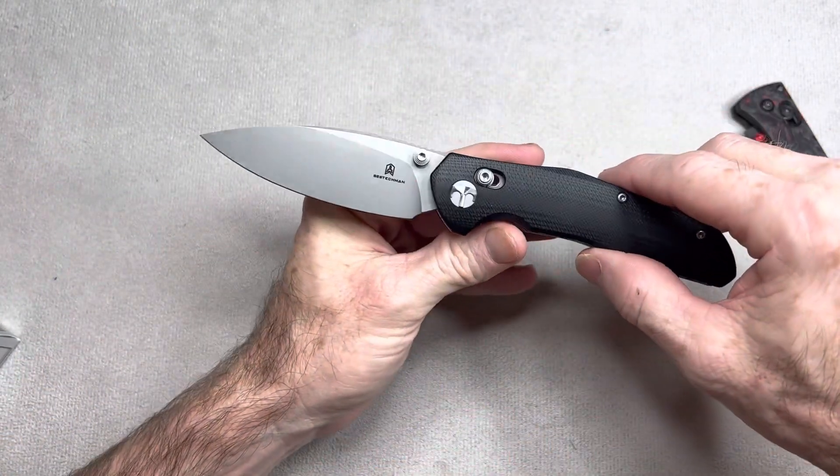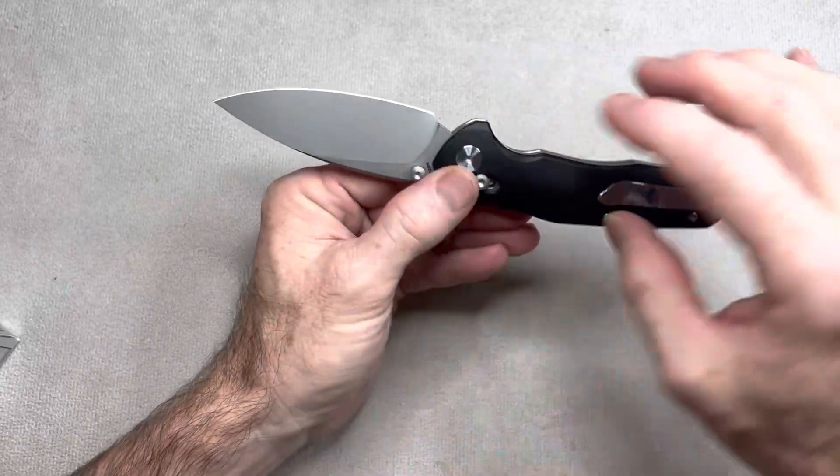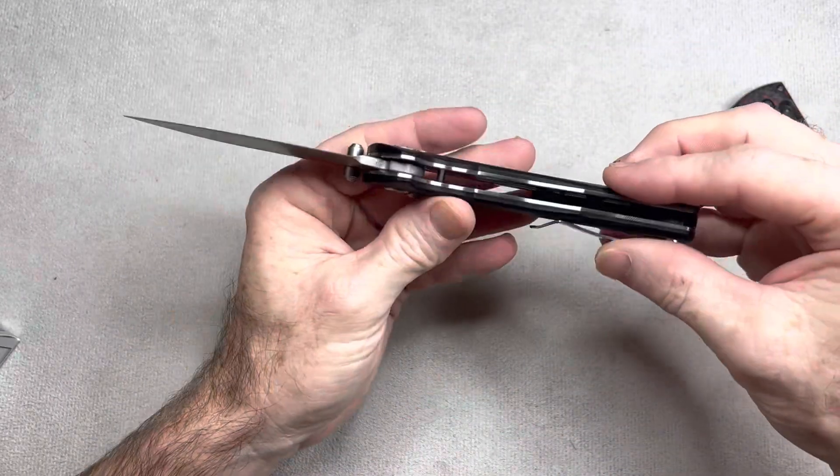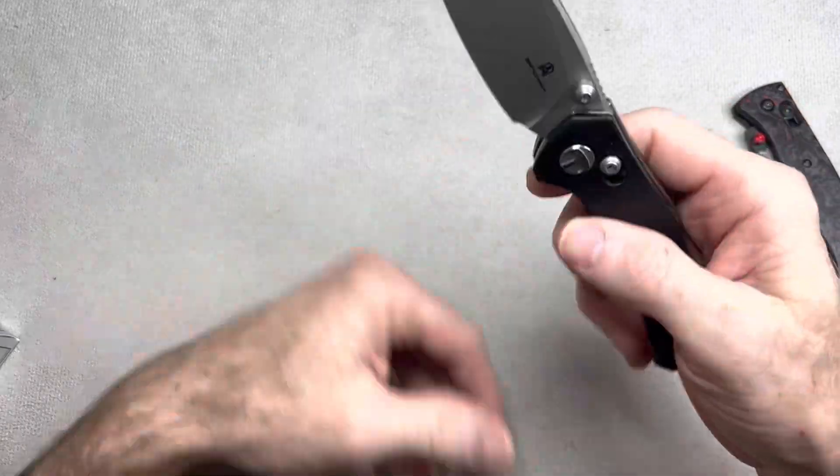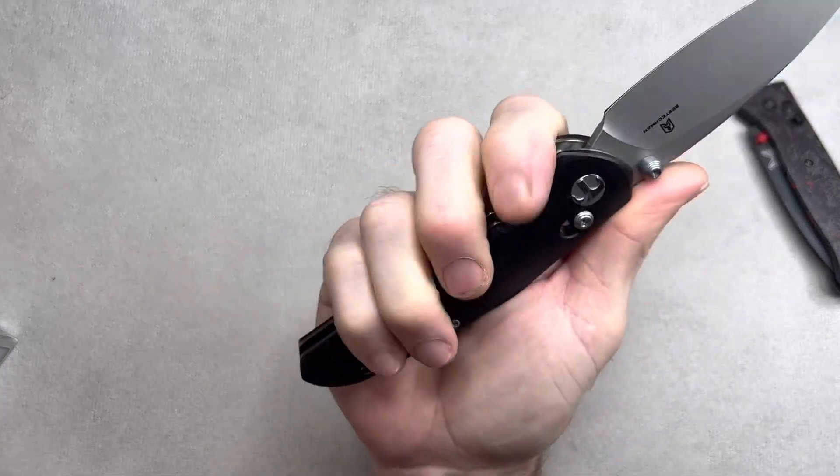This is the stonewashed finish blade, G10 scales, steel liner, steel pocket clip. Three and a quarter inch blade. Ergos are really good right off the bat, I'll tell you that already, really good.